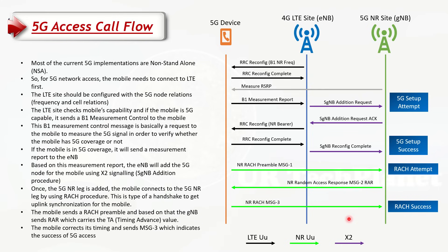The gNodeB sends a Random Access Response carrying the timing advance, so the UE can adjust its timing offset and send Message 3. Once the gNodeB receives Message 3, it marks a RACH success, and the UE is now successfully connected to 5G. This is how the full 5G network entry call flow works in NSA. Hopefully it was simple and each step makes sense — like a story showing how the 5G device moves from LTE to the 5G node.